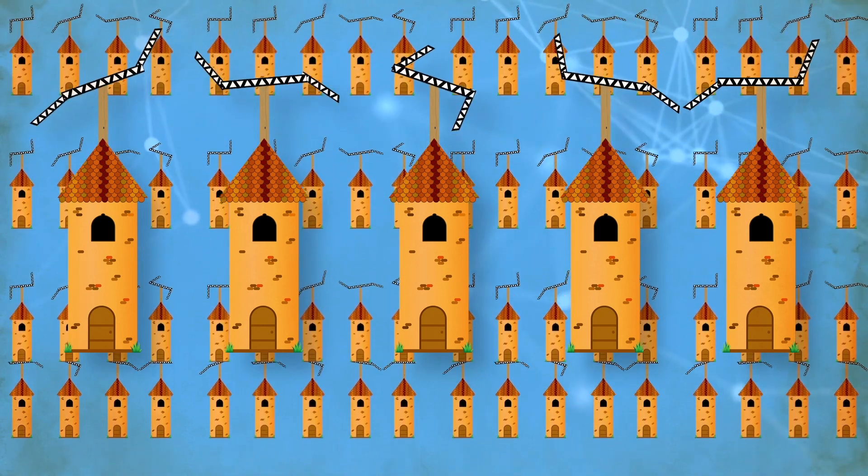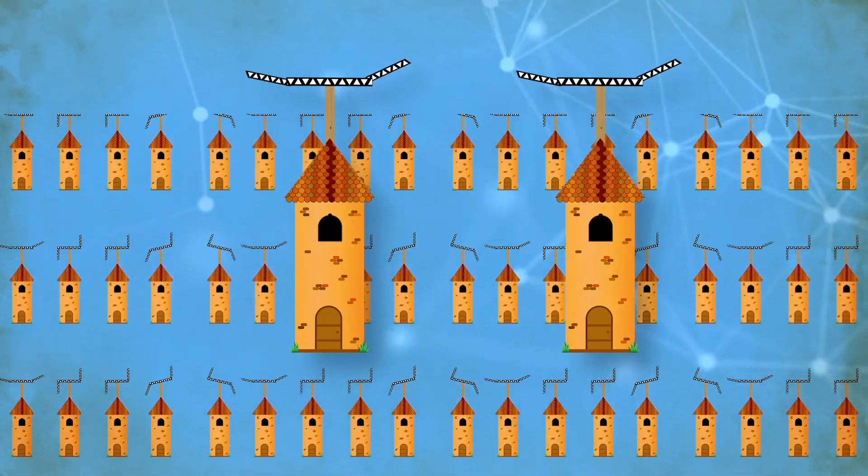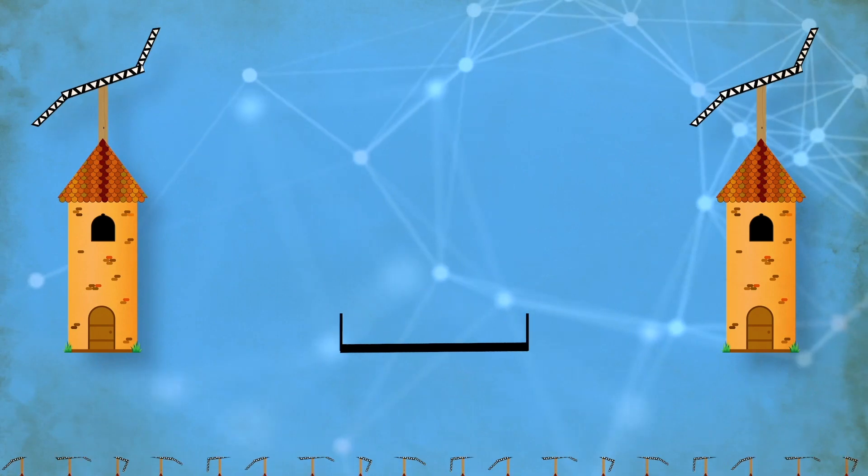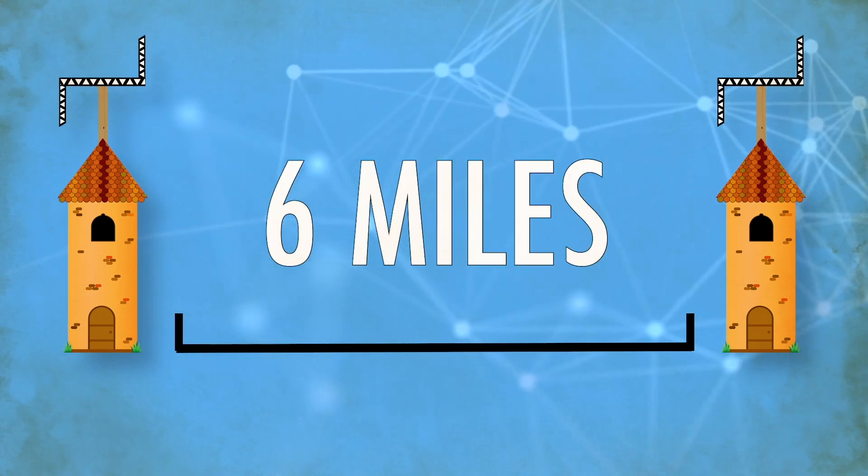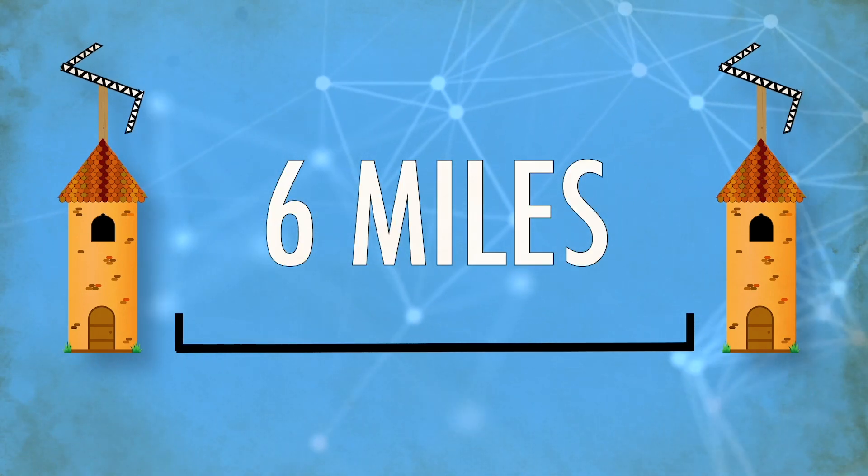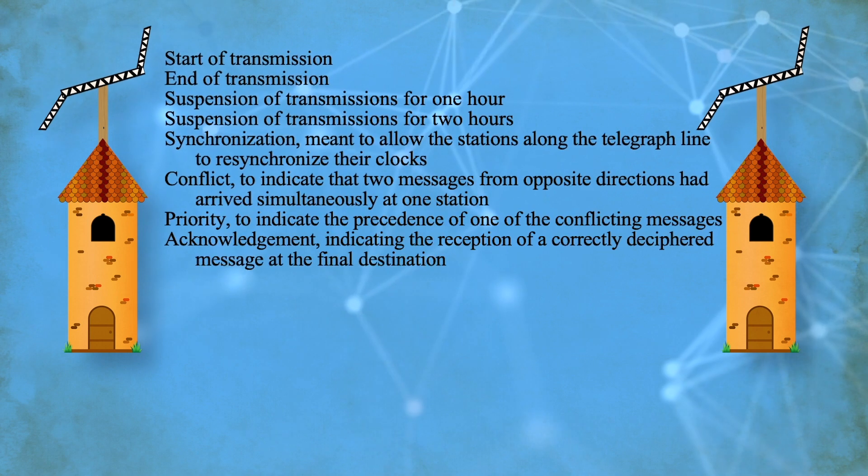That meant it was inherently prone to human error. After all, it was in essence a huge game of telephone being played between people who were at an average distance of six miles apart. But Schaap had anticipated that.